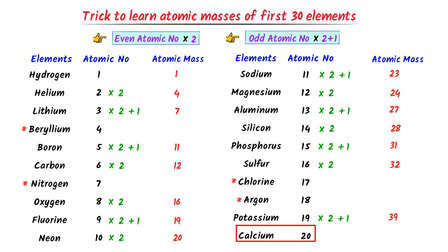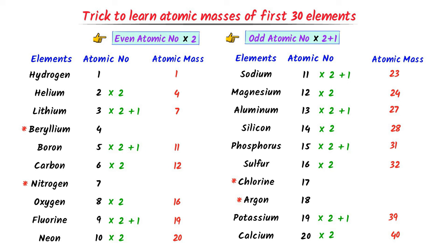The atomic number of calcium is 20. I write 20 × 2. I get 40.